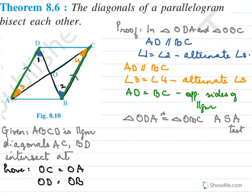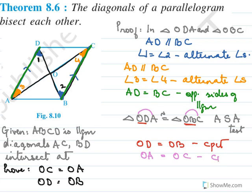Now if they are congruent, by CPCT we can say OD equals OB by CPCT, and we can also say OA equals OC by CPCT. That is exactly what we needed to prove. So the diagonals of a parallelogram bisect each other.